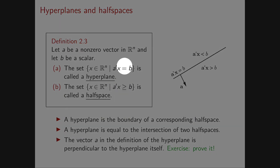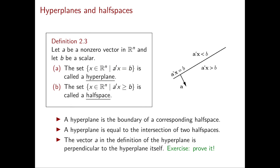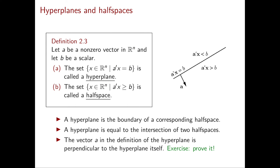The definition of a half space is very similar: replace the equality sign with an inequality sign. In the picture, the hyperplane Aᵀx = b is the line, with the half space Aᵀx ≥ b below it and Aᵀx ≤ b above it. A hyperplane is the boundary of both corresponding half spaces, and the intersection of the two half spaces is exactly the hyperplane. An important property is that the vector A is always perpendicular to the hyperplane.